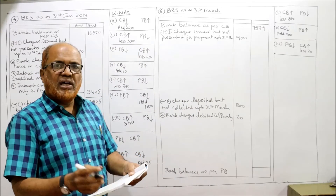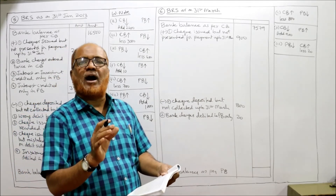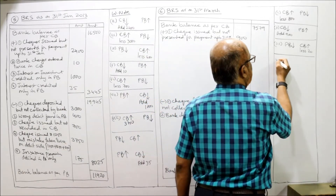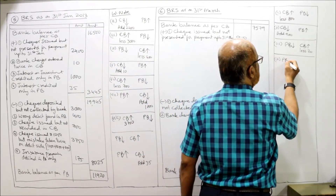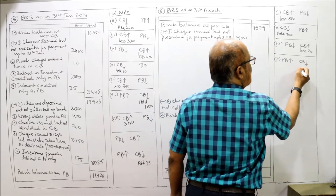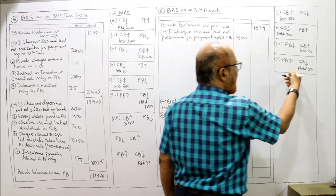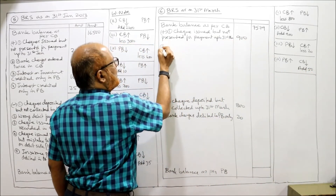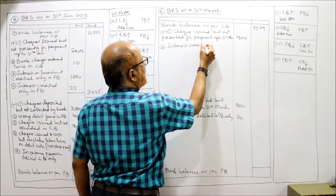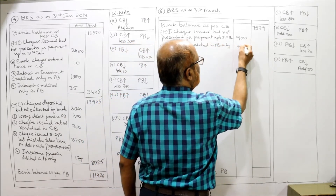Fourth item: there was a credit of rupees 50 in the pass book for interest on a customer account. Pass book balance increases because of this credit. Cash book shows less balance. Our starting point, the cash book, shows less balance, so we add. Add: interest credited in pass book only — rupees 50.